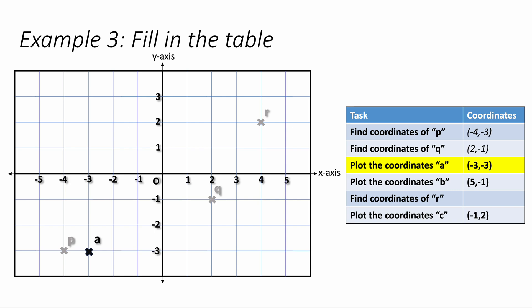The coordinates of B is 5, minus 1. 5 across and minus 1 down goes here. We are plotting B like this.